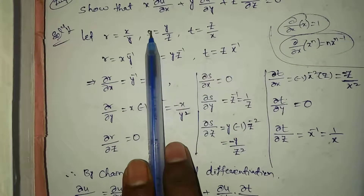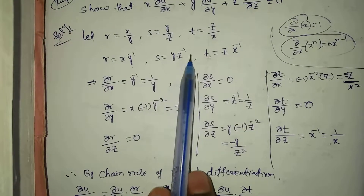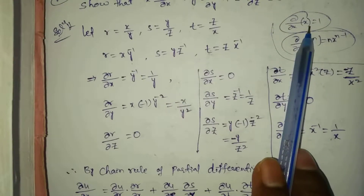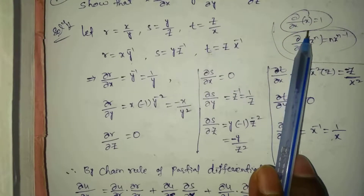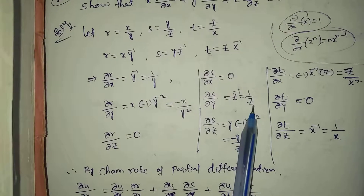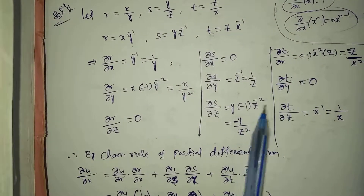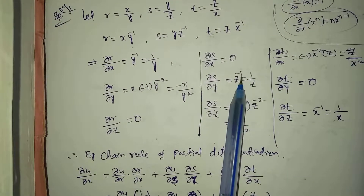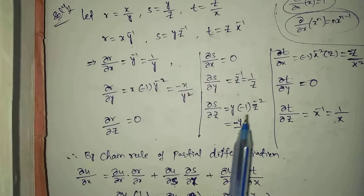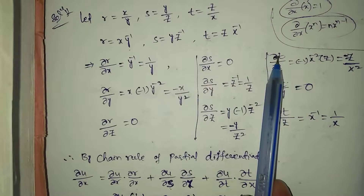For ∂s/∂x: x is not involved in s = y/z, so ∂s/∂x = 0. For ∂s/∂y: using the formula, ∂/∂y(y) = 1, so ∂s/∂y = 1/z. For ∂s/∂z: applying the power rule with z replaced, n = -1, giving z⁻², so ∂s/∂z = -y/z².